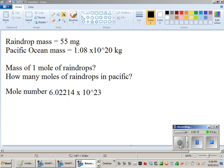Given that the Pacific Ocean has that mass, 1.08 times 10 to the 20th kilograms, and that a raindrop has a mass of 55 milligrams.